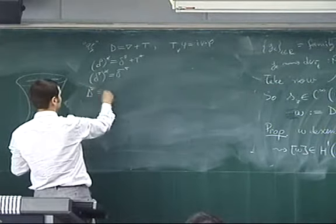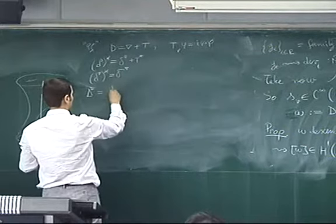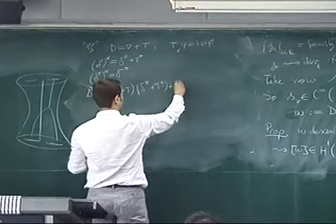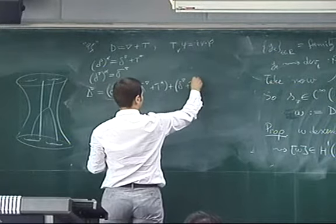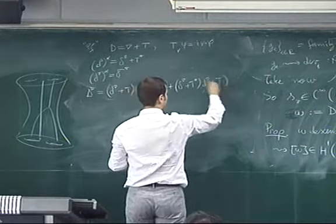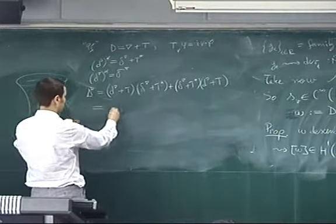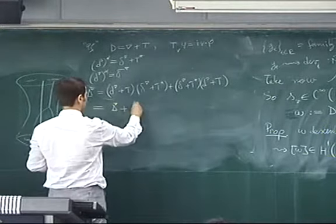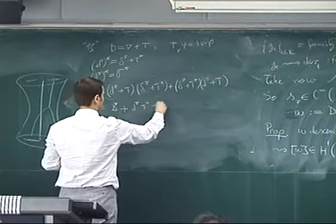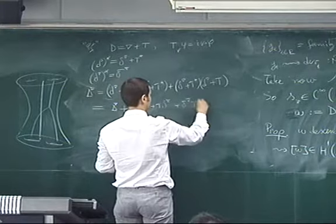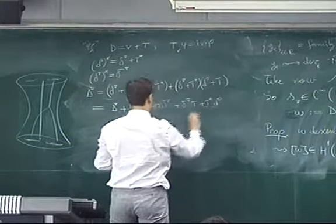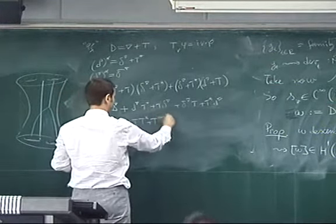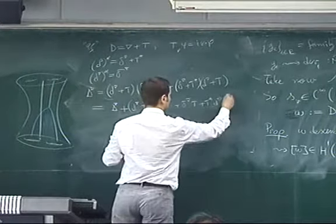So, then the Laplacian of D is D nabla plus T, delta nabla plus T star, plus delta nabla plus T star, nabla plus T. And now, you get first, the connection Laplacian for the Levi-Civita connection. Then, you get D nabla T star plus T delta nabla plus delta nabla T plus T star D nabla, plus T T star plus T star T. And their observation is that these terms go away.